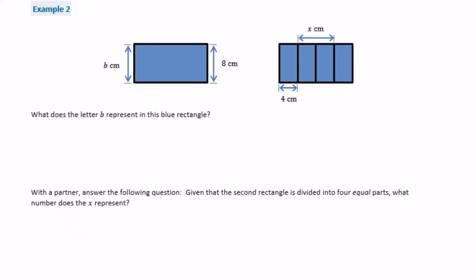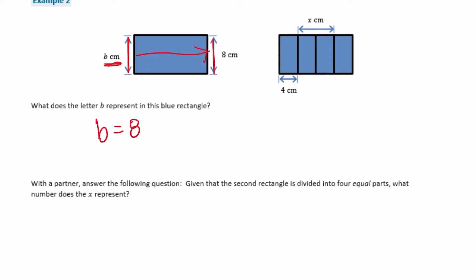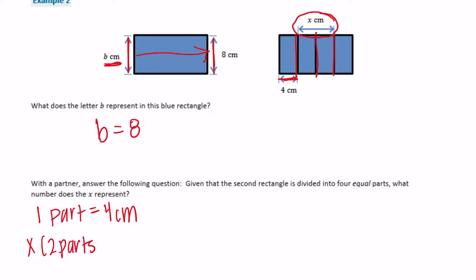Example 2: what does the letter B represent in this blue triangle? The other side says it's 8 centimeters long, and since both refer to the height, B equals 8 centimeters. Working with a partner: the second rectangle is divided into 4 equal parts. If one part is 4 centimeters, then X, which represents 2 parts, equals 4 centimeters times 2, or 8 centimeters.